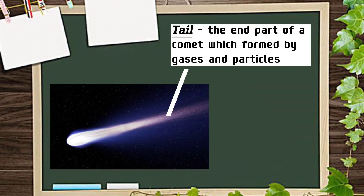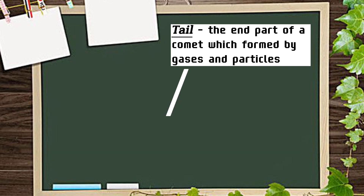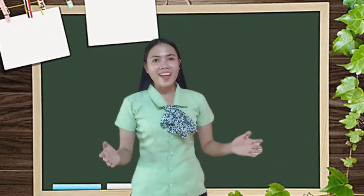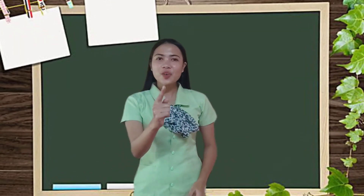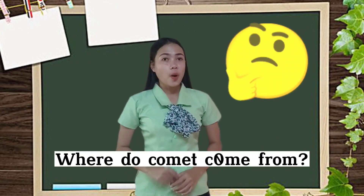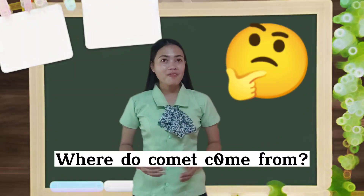Another part is the tail. The tail is the end part of a comet, which is formed by the gases and particles. Did you ever wonder where our comets came from? Comets came from two regions in the solar system.